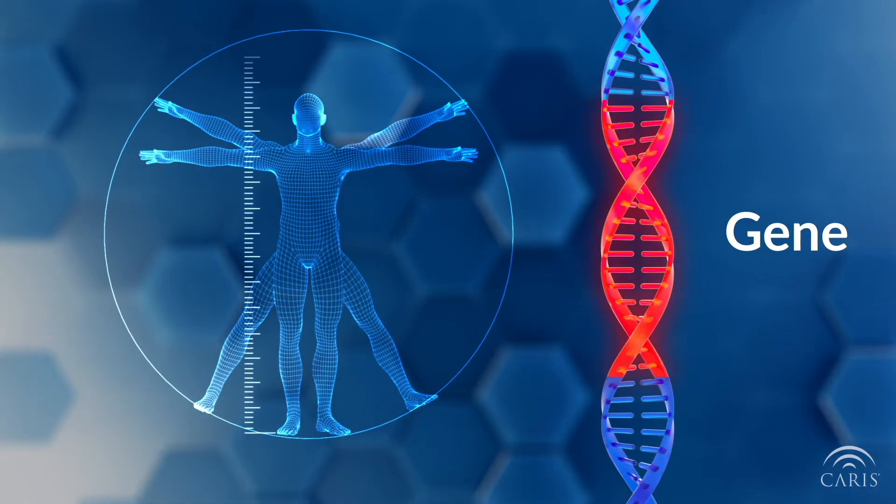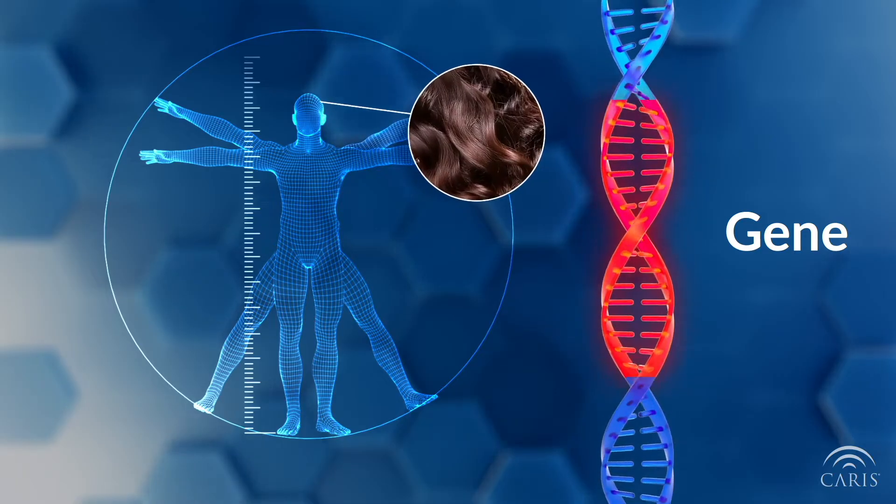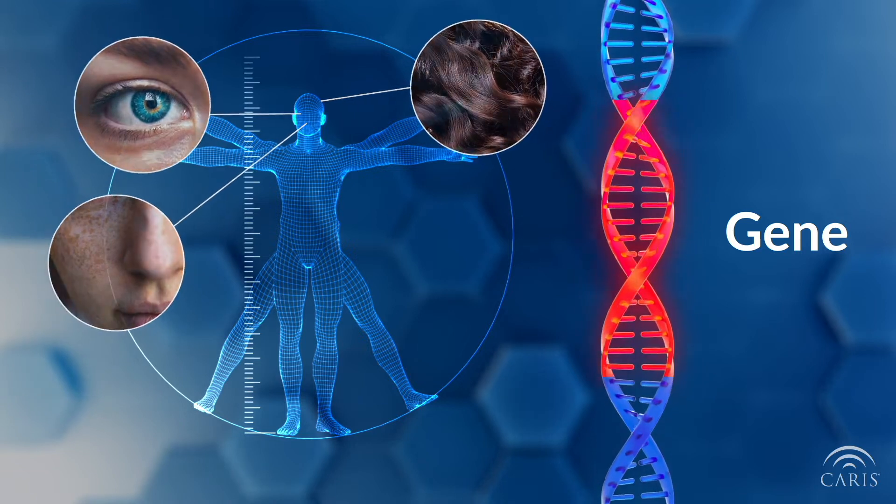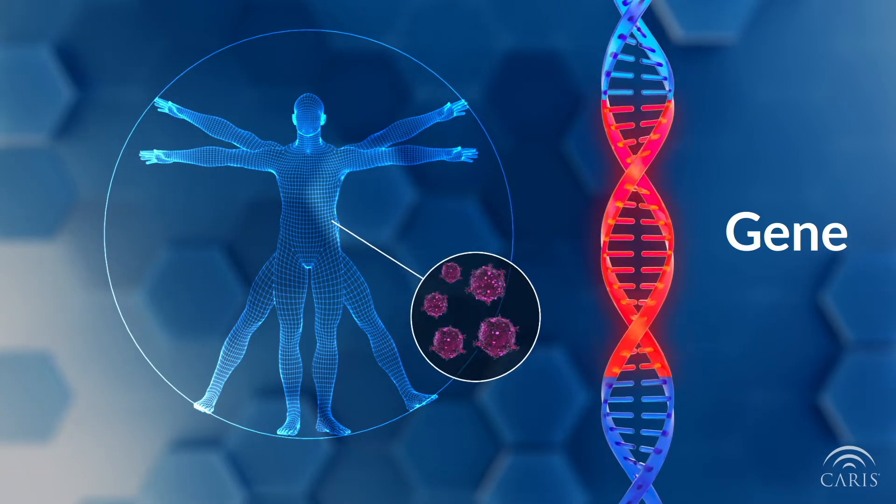For example, our genes determine our height, our hair texture and color, our eye color, and whether or not we have freckles. Sometimes our genes can even predispose us to certain diseases.